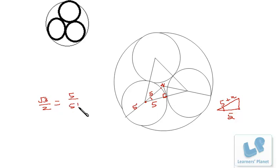So 5 upon 5 plus x. So 5 plus x is actually 10 by root 3. That means from this point to this point, the total length is 10 by root 3.